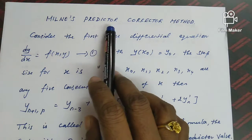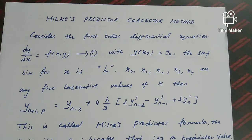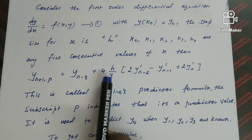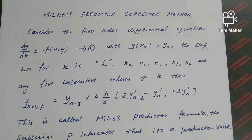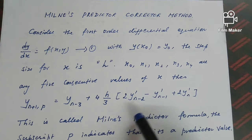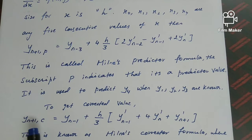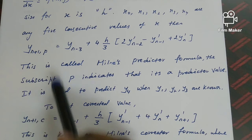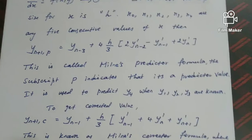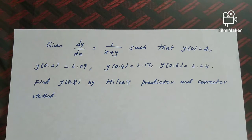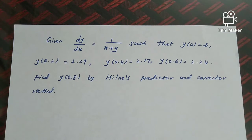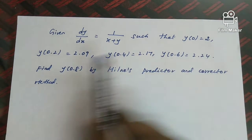When using Milne's predictor-corrector method, we should have four consecutive values; only then can we find the next value. The predictor formula is denoted y(n+1,p) and the corrector formula by y(n+1,c). Look at the first problem: given dy/dx = 1/(x+y) such that y(0) = 2 and y(0.2) = 2.09.